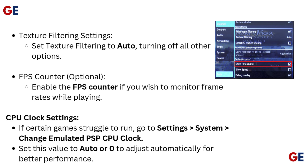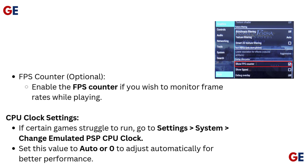FPS counter (optional): enable the FPS counter if you wish to monitor frame rates while playing. CPU clock settings: if certain games struggle to run, go to Settings > System > Change Emulated PSP CPU Clock, and set this value to auto or zero to adjust automatically for better performance.